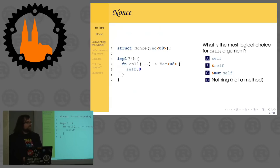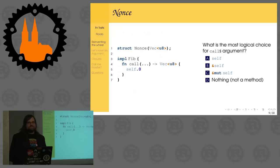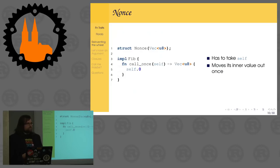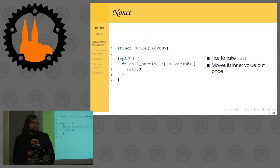Third example — you might sense a pattern here. This is a struct called Nonce: you have some data in it, and whenever you call it, you actually get the data it contains — the actual vector. Who thinks it's most sensible to call this by value? About half the room. We're pretty much unanimous that by value makes most sense, because we're actually moving the vector out of our struct. If we just took a reference, we wouldn't be allowed to move it somewhere else. We need to own the struct so we can move its data out of it. So in this case, we could just implement call_once.